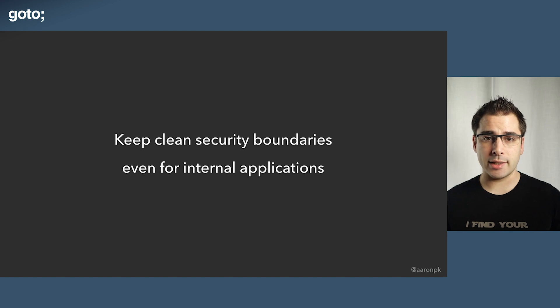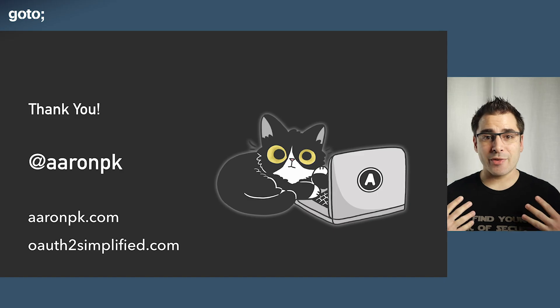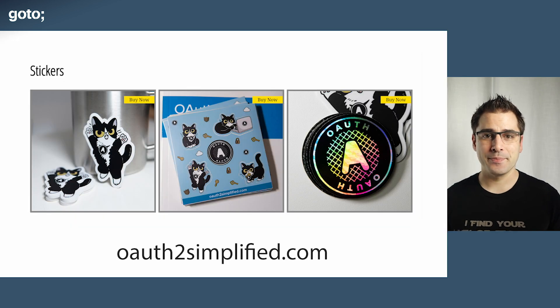So what's the moral of the story? Each of these bugs did not seem that bad on its own. But the thing that ties it all together is that it's really important to keep clean security boundaries between different parts of your application. Don't let parts of your application pretend to be other parts or pretend to be users. We have the OAuth framework for a reason — it ensures the user was involved when issuing an access token for that user. You can get a copy of my book at OAuth2Simplified.com. Thank you so much.